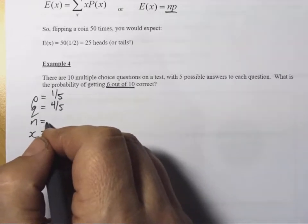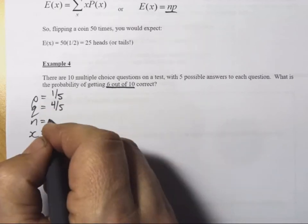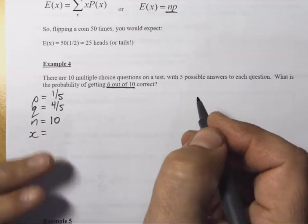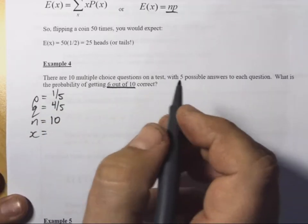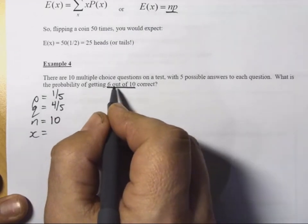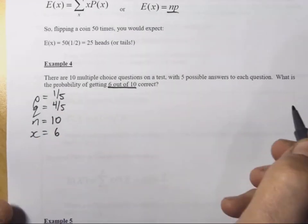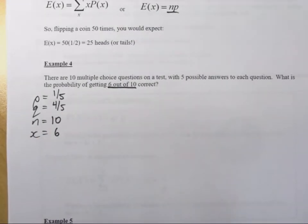N, here, is the number of trials. Well, there's 10 multiple choice questions to guess, so N must be 10. And we have to guess 6 out of 10 correct, so X must be 6. 6 correct guesses.